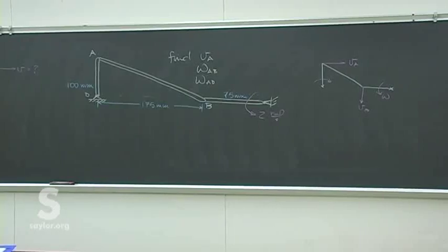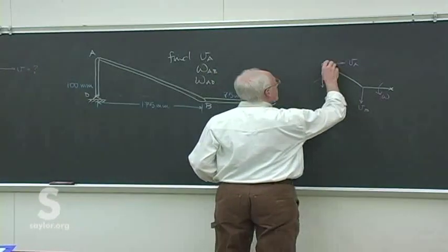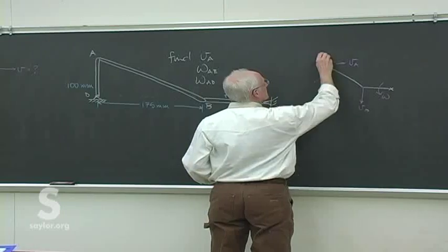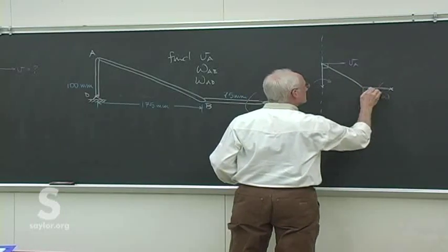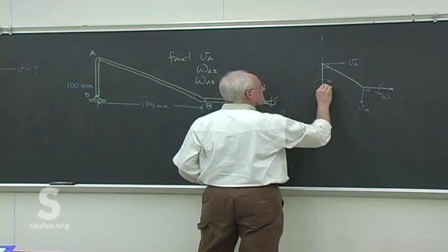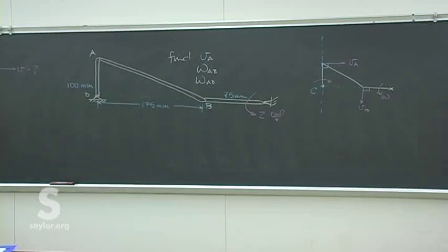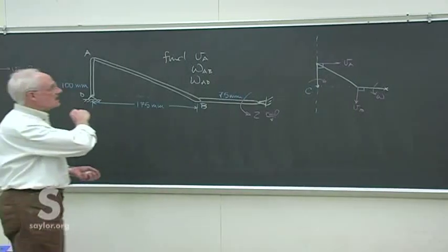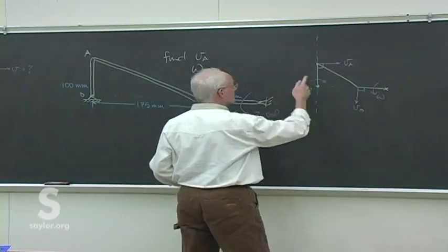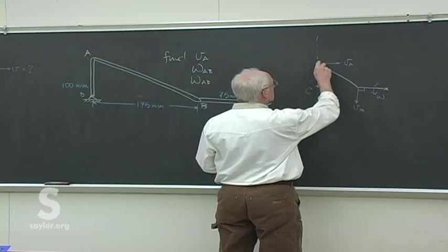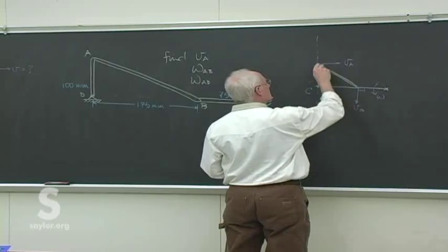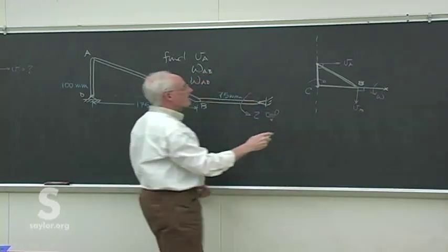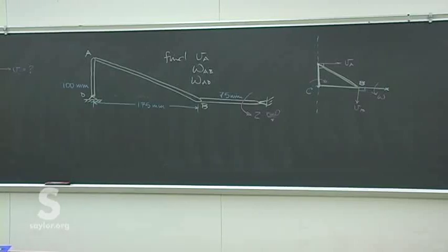And then you can draw perpendiculars to those, which is fairly easy because it's along existing arms and horizontal/vertical directions. So you should be able to place point C right there. That's the instantaneous center — making A, B, C a virtual instantaneous rigid body, where C and D are the same point.